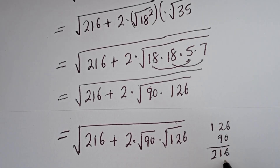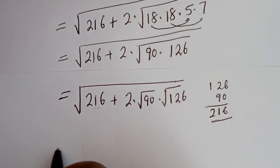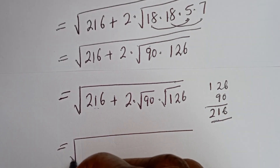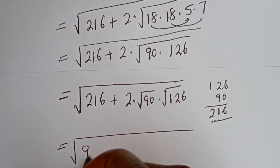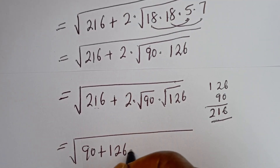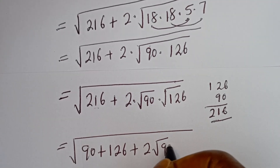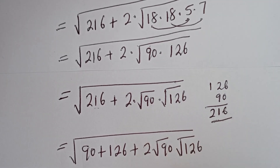You can see that 90 plus 126 gives 216. So this equals square root of 90 plus 126 plus 2 times square root of 90 times square root of 126.